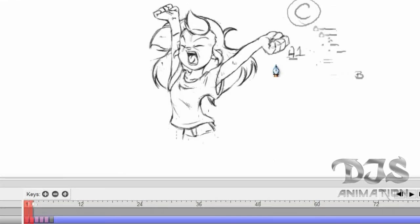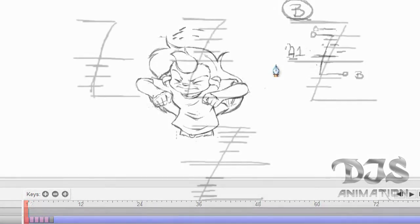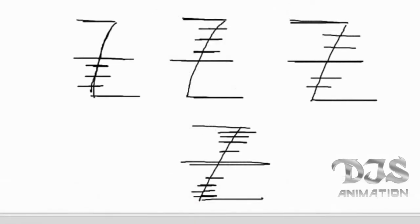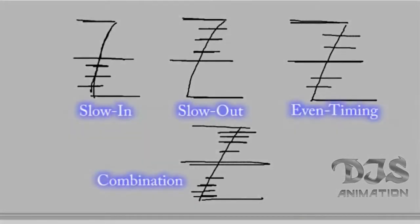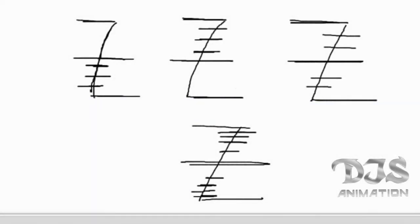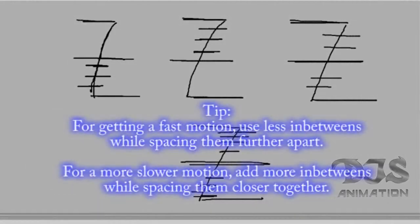When it comes to timing charts in general, there are four different types: slow in, slow out, even timing, and a combination of all of them. The basic rule of in-betweens is that every slow movement requires that many in-betweens be spaced close together. And if you want a faster movement, it will require fewer in-betweens spaced further apart.